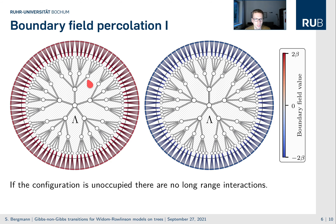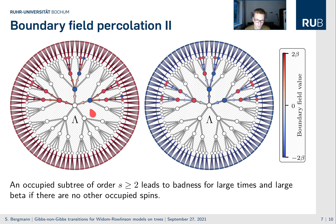I would like to show some pictures of how this recursion works. We have plus and minus boundary conditions with the corresponding fields, and we take configurations eta in the center which are identical — just empty. In the empty case, there are no percolating boundary fields, so this configuration is actually good. But if we take a subtree indicated by these arrows and occupy the spins along the subtree, we have a percolating boundary field. These boundary fields actually reach the center: they stay positive here and negative there. This happens for growing lambda, regardless of the size of lambda, as soon as the subtree order is greater than 2.